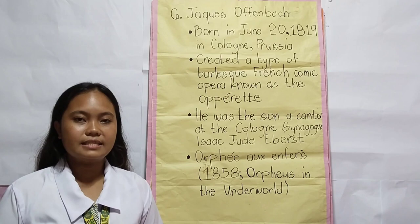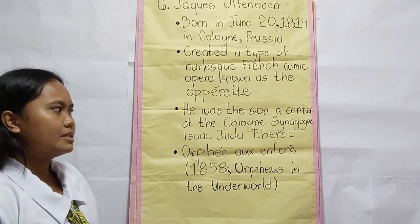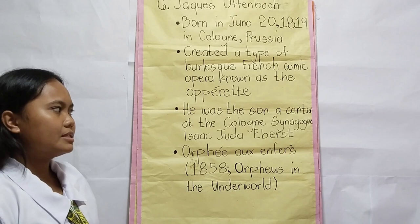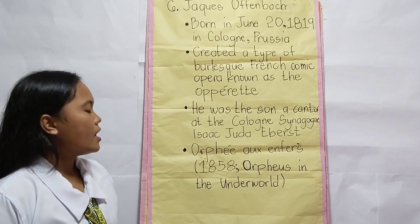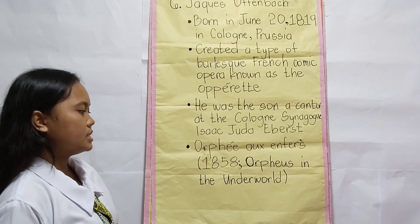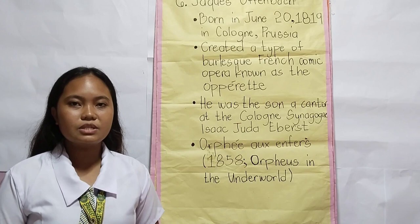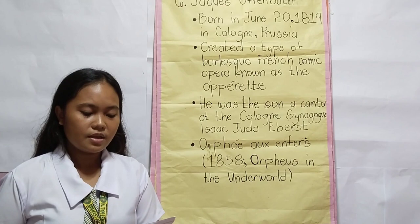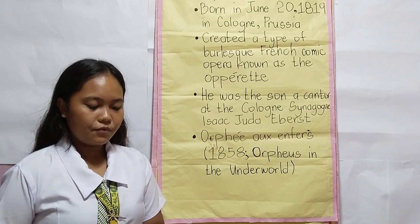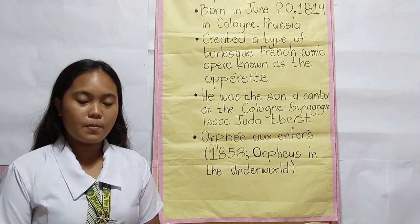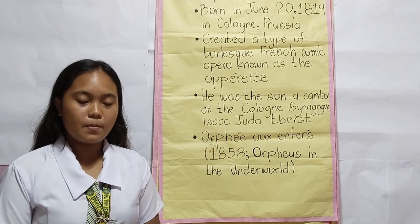Offenbach was the son of a cantor at the Cologne Synagogue, Isaac Judah Eberst. His father was a Jewish amateur violinist who taught singing as well as various instruments. Orpheus in the Underworld is a classic story of Orpheus — a renowned musician distraught over the death of his wife Eurydice — who attempts to rescue her from the underworld, the place of the dead. This was Offenbach's first full-length opera, a box office success, and one of his most performed operas, continuing to be revived in the 21st century.